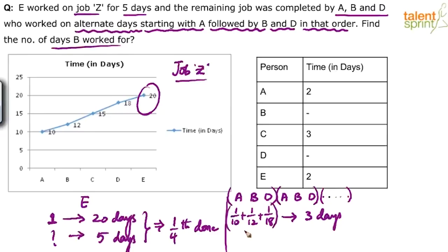The LCM of 10, 12, and 18 is 180. So 1/10 + 1/12 + 1/18 = 18/180 + 15/180 + 10/180 = 43/180. They can do 43/180 in three days. Note that 43/180 is approximately equal to 45/180 = 1/4, so approximately one-fourth of the work is done in every three-day cycle.